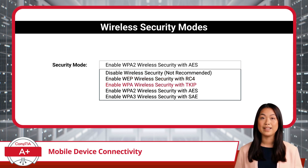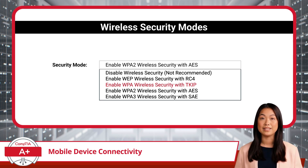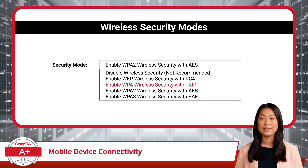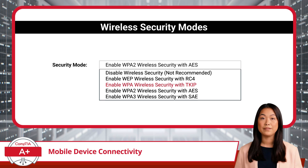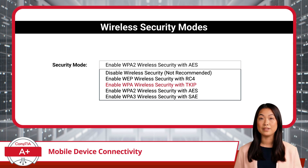Moving on, we have WPA, or Wi-Fi Protected Access. Enabling WPA significantly enhances security compared to WEP by offering stronger encryption and authentication mechanisms. WPA uses TKIP — Temporal Key Integrity Protocol — for encryption. You can think of WPA as upgrading from a flimsy lock to a sturdy deadbolt on your front door.